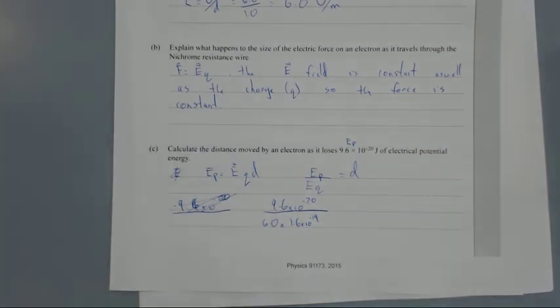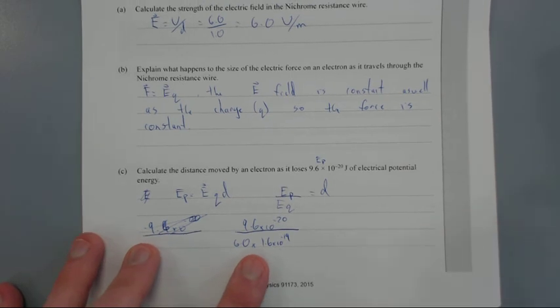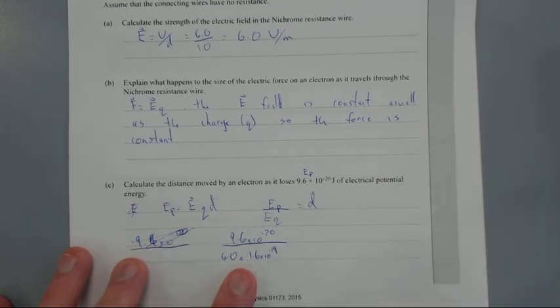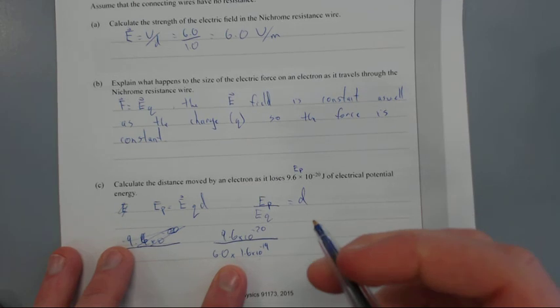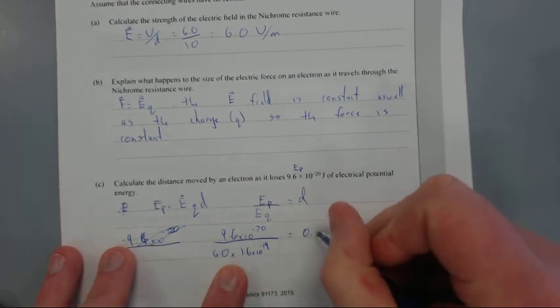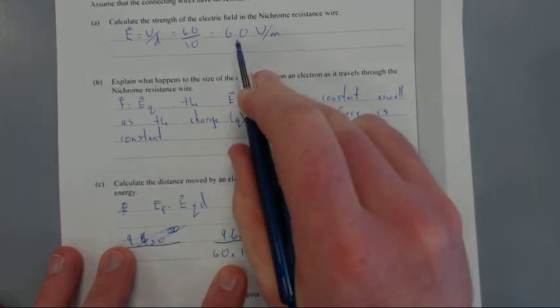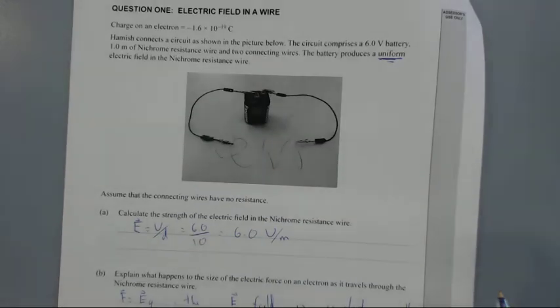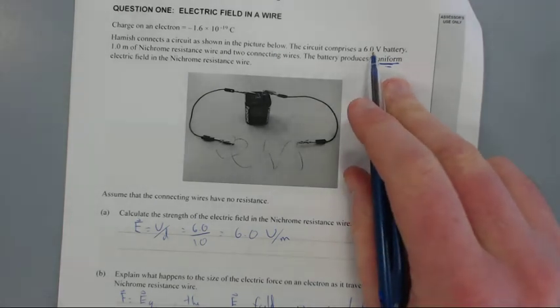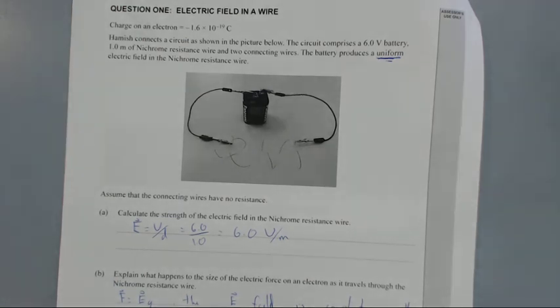You can put in a negative but it will just spit out the negative distance which tells you the direction. You don't need to for this one. Plug that into your calculator gives you 0.10 meters, 2 significant figures, because the lowest significant figure is the battery which is 6 and that's 2 SF.